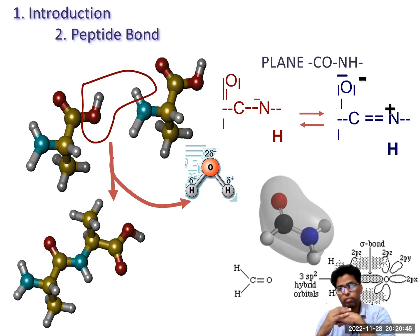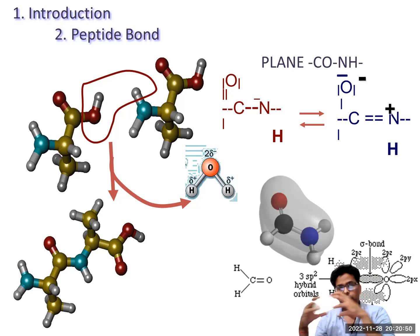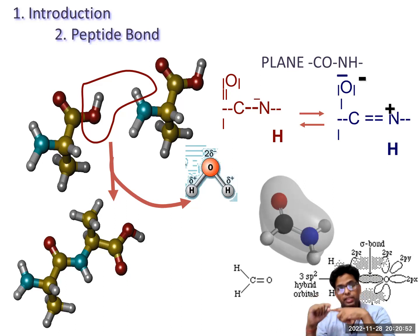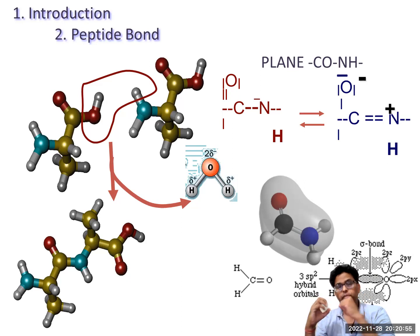So by this electron interaction, a water molecule is liberated — hydrogen from the NH2 group and OH from the COOH group combine. One bond forms, and in the case of proteins, one peptide bond is formed between two amino acids.